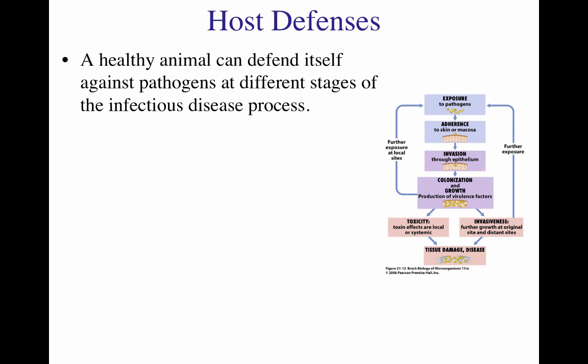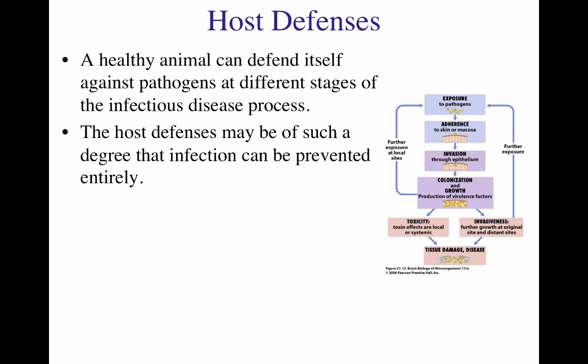Now let's take a bird's-eye view of the host's immune defenses. The four points of infection — exposure, adherence, invasion, colonization, and growth — are targeted by both the innate and adaptive immune system. Our defenses are in place at every stage to lower our exposure to disease. Often our defenses are sufficient and we don't get sick, even though we may be exposed to many pathogens.